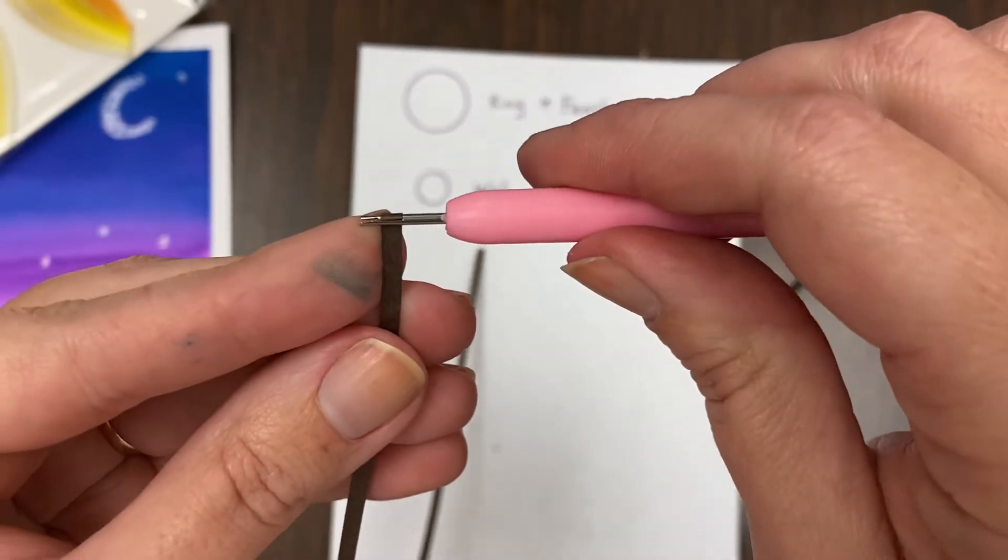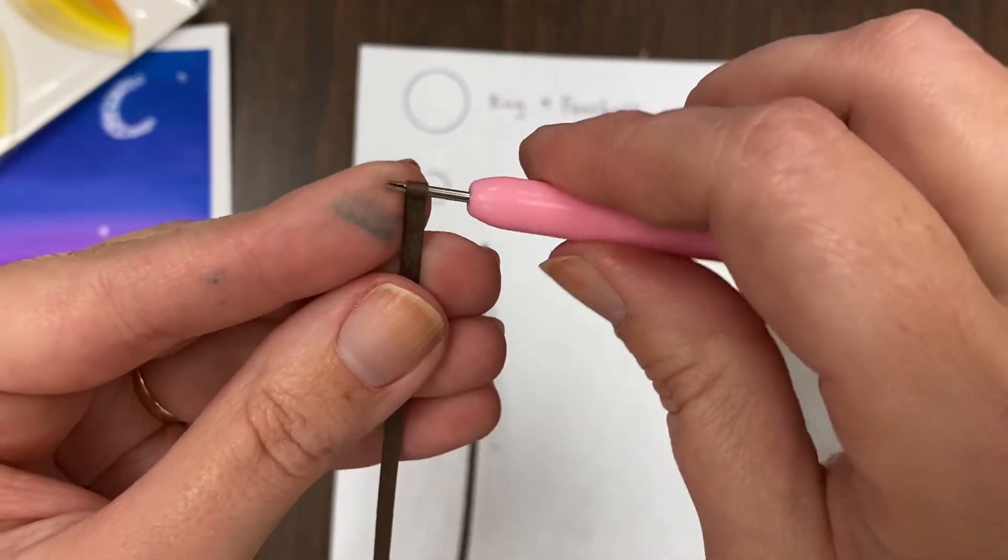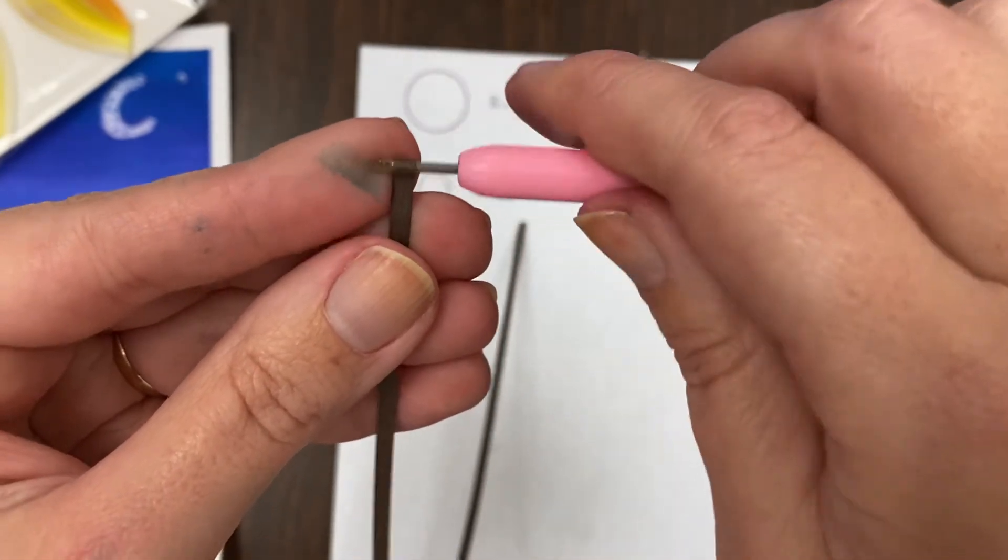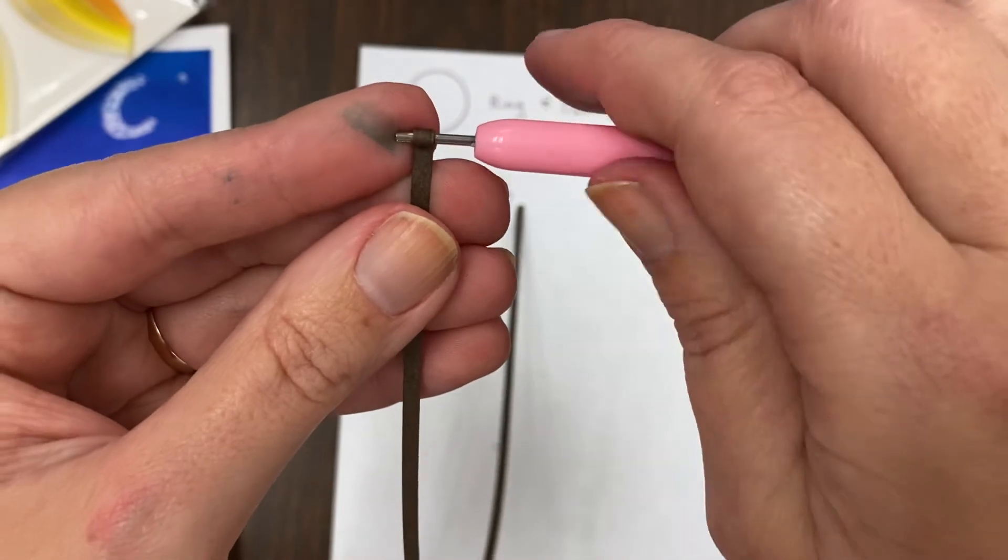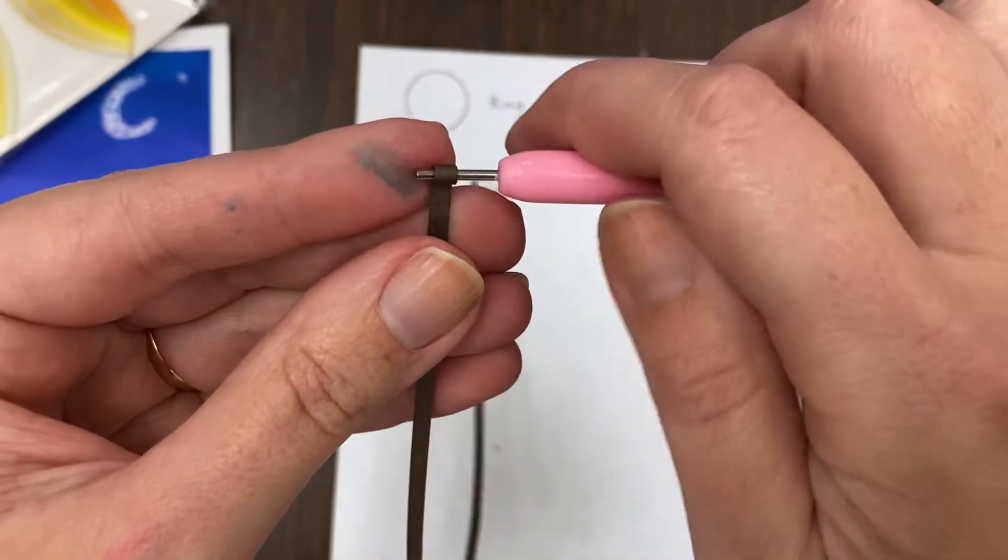And then you just start turning. And you turn, turn, turn. You're going to do that for the entire length of this strip.